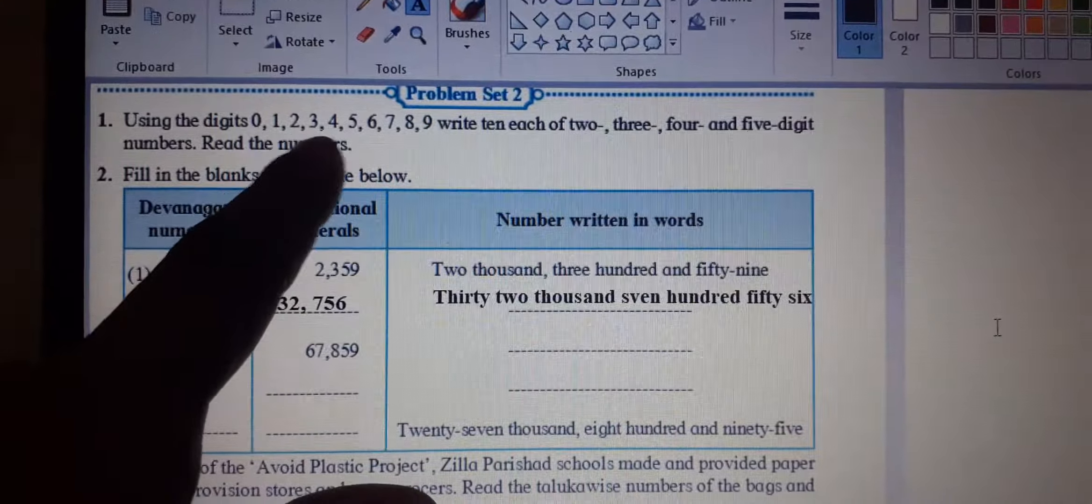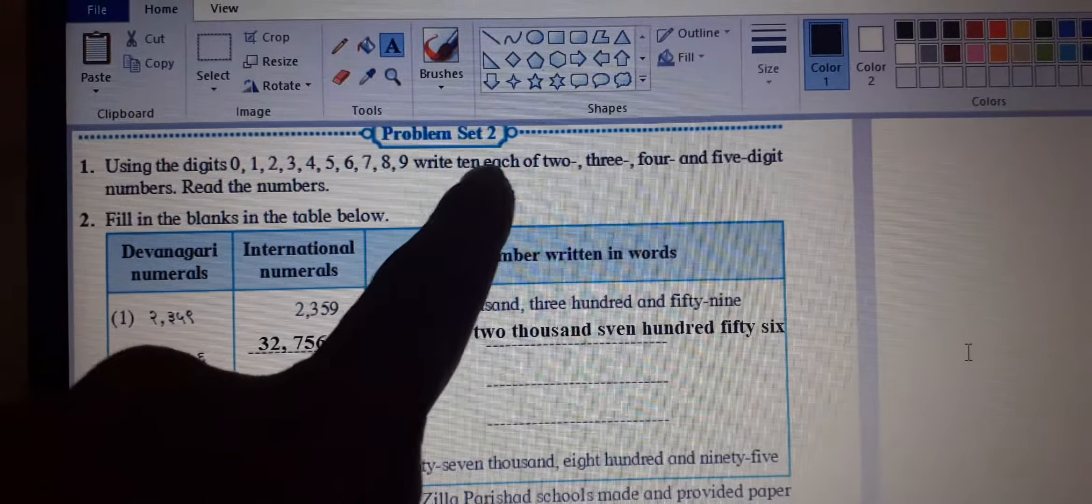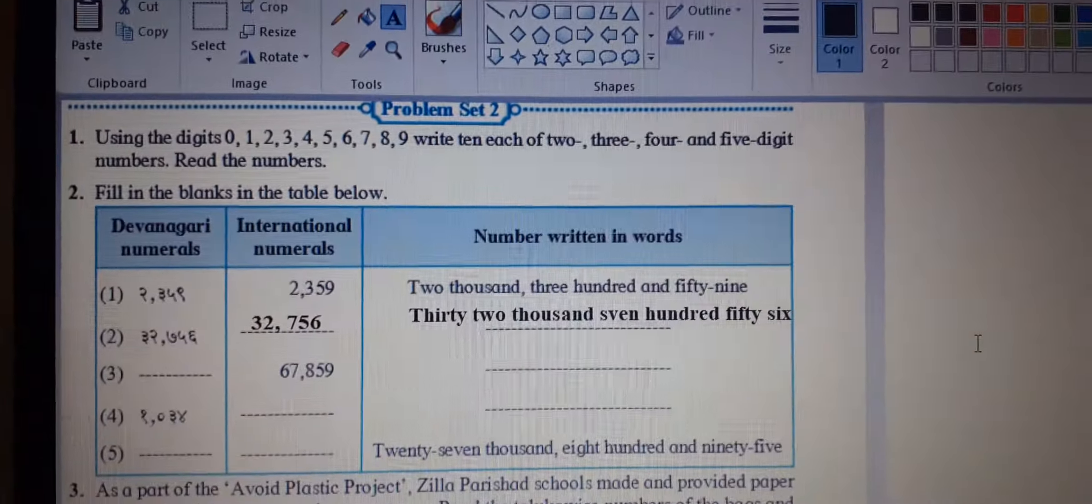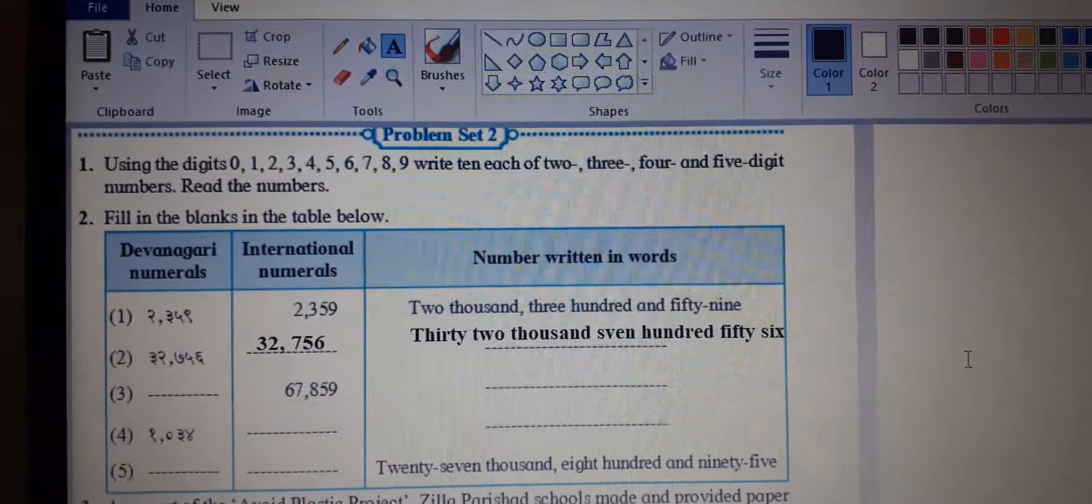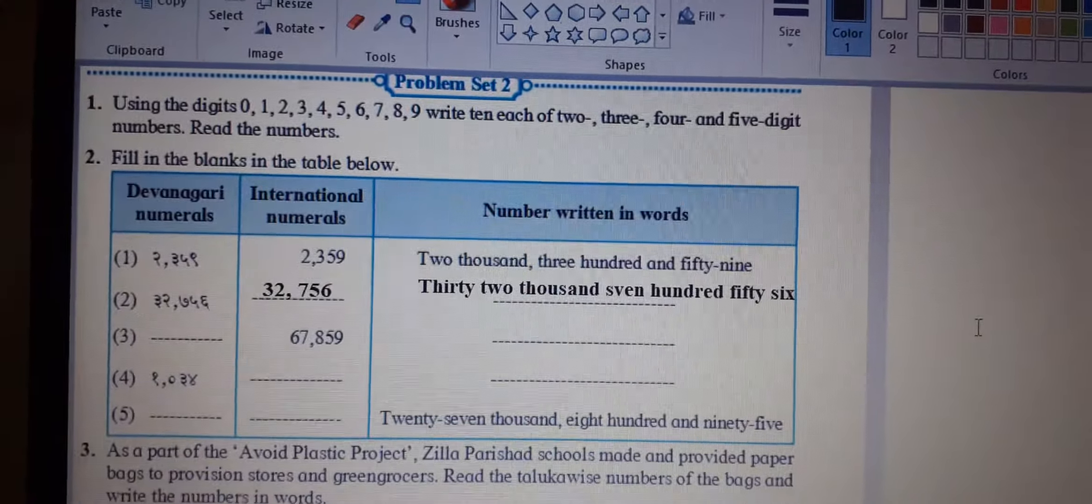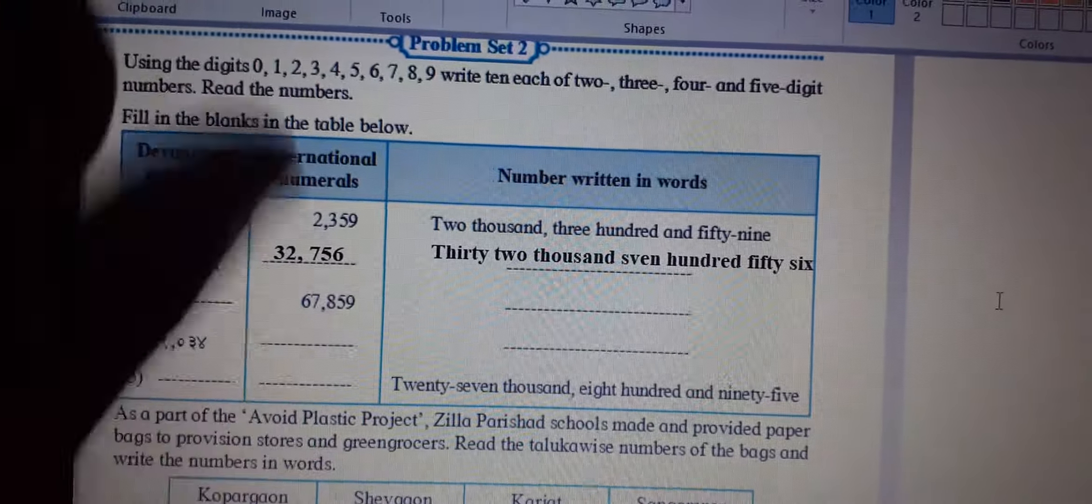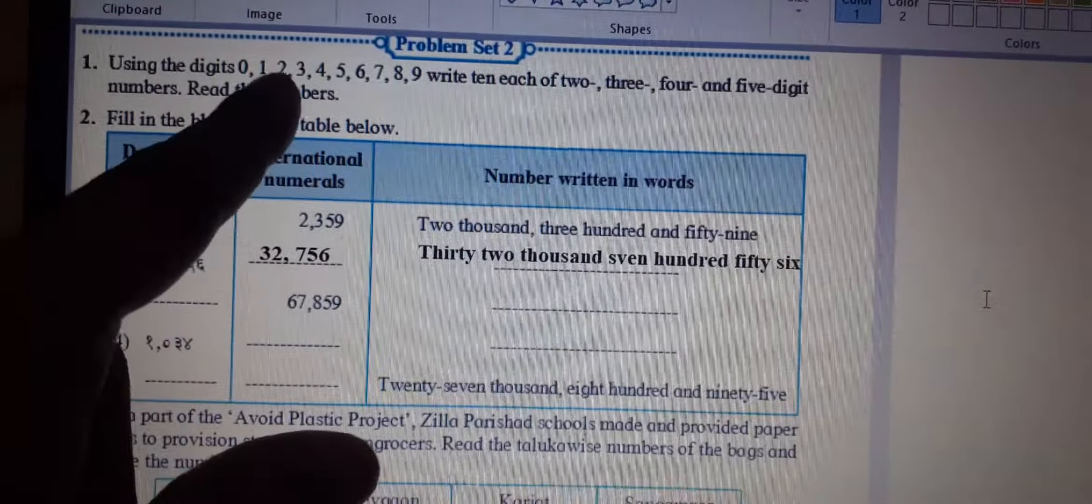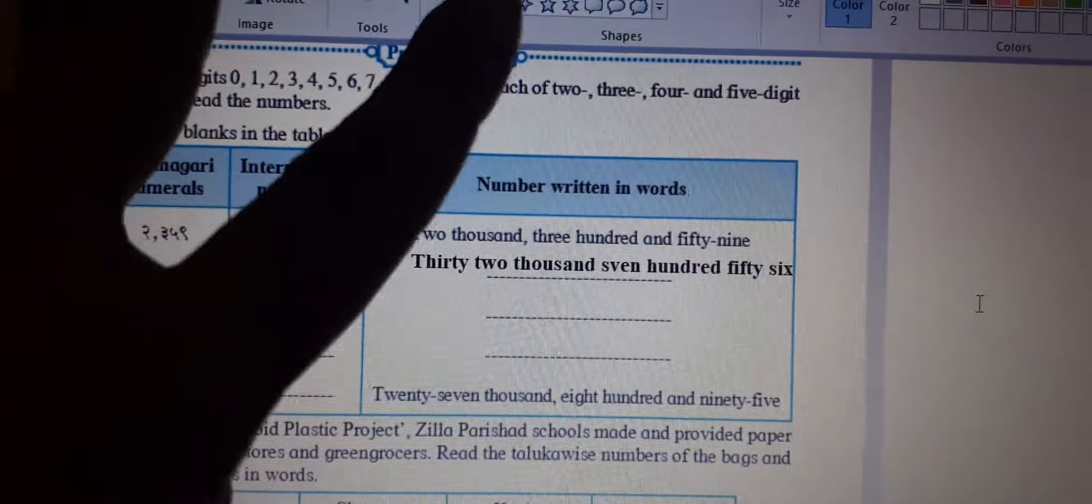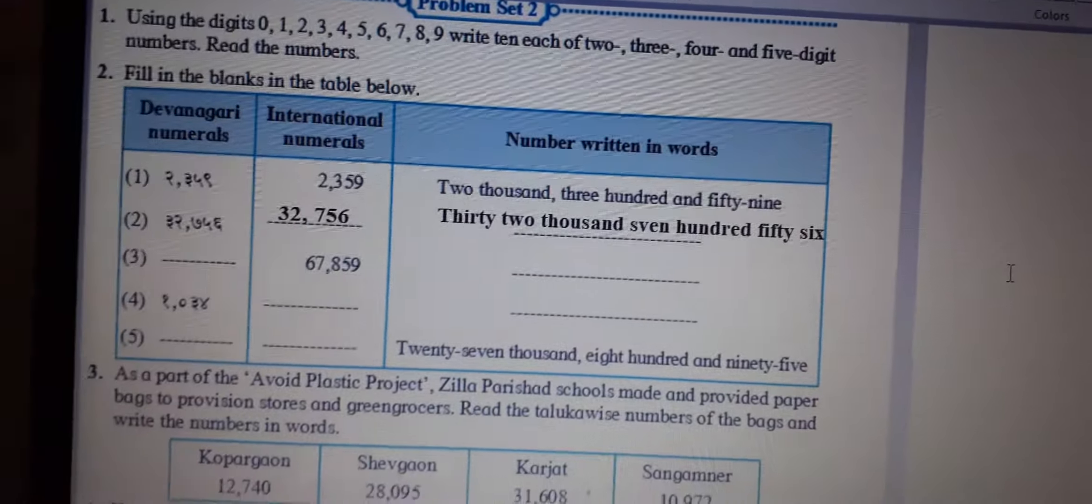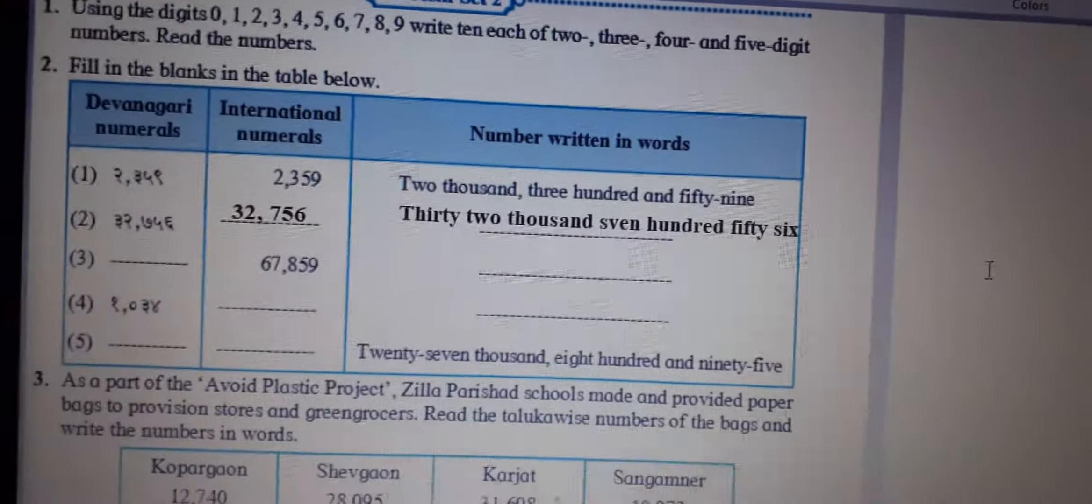Using the digits 0, 1, 2, 3, 4, 5, 6, 7, 8, 9, write 10 each of 2, 3, 4 and 5 digits number. Now I have 10 numbers - 2 digits 10, 3 digits 10, 4 digits 10 and 5 digits 10. Now I have 2 digits 10 numbers: 12, 10, 23, 34, 56, 76, 12, 21. Now I have 2 digits 10 numbers.